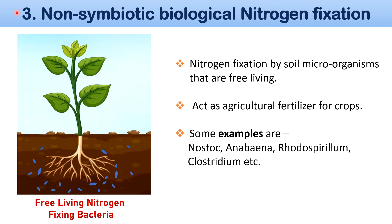The third one is non-symbiotic biological nitrogen fixation. In non-symbiotic nitrogen fixation, the fixation is done by free-living bacteria living in soil. The soil contains many free-living nitrogen-fixing organisms, and these bacteria also act as fertilizers for crops. These include a number of aerobic, non-aerobic, and blue-green algae. Some examples are Nostoc, Anabaena, and Clostridium.